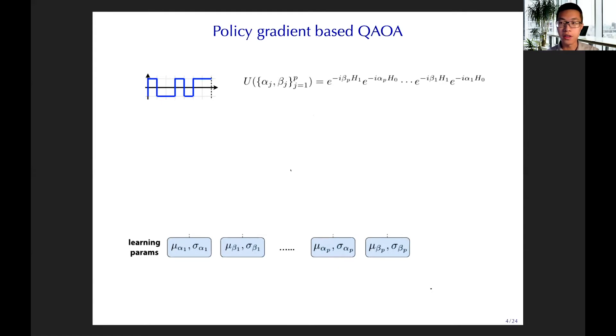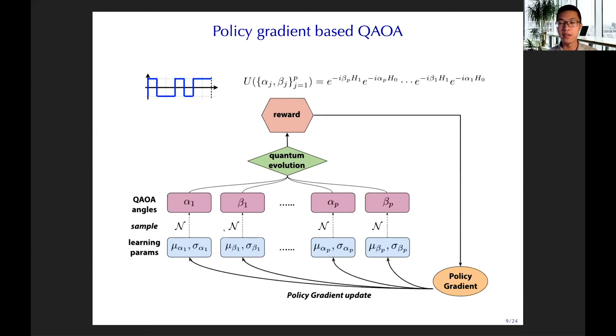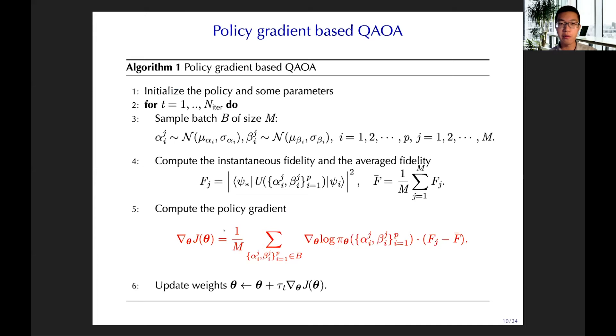Let's talk about the schematic of this PGQAOA. So we start with the parameter of our policy, then we get our policy. We sample the QAOA angles from our current policy. We aggregate them to perform quantum evolution to get the evolved quantum state. Then we compute the reward through fidelity. Then we aggregate the samples and the rewards to perform policy gradient to update the weights. So this is the algorithm. We sample a batch of samples, then compute fidelity, then compute the policy gradient. And then we do this loop again.